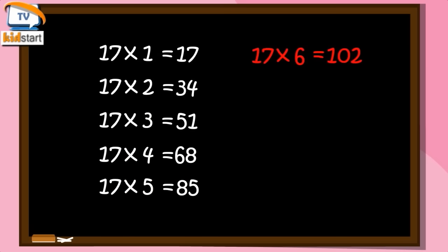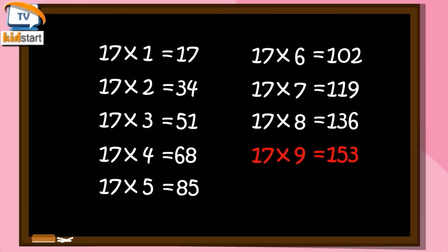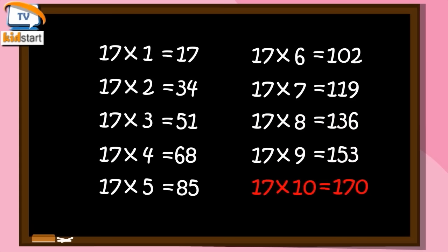17 sixes are 102. 17 sevens are 119. 17 eights are 136. 17 nines are 153. 17 tens are 170.